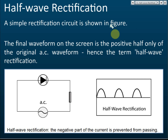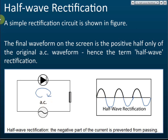For half wave rectification, let's say initially we have an alternating current. This is the display of the cathode ray oscilloscope. For alternating currents, the display looks like this. The center line shows the divider of the directions of the current. Above this line, the current moves forward — let's say clockwise.